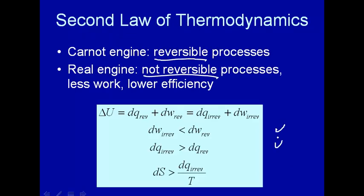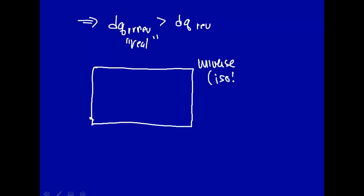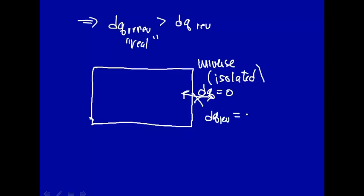Now let's consider an isolated system — let's consider, in fact, the universe, which we're going to assume is isolated. In other words, there are no other universes around which can exchange energy with our universe. If it's isolated and can't exchange energy, then dq has to equal zero, so dq reversible has to equal zero.